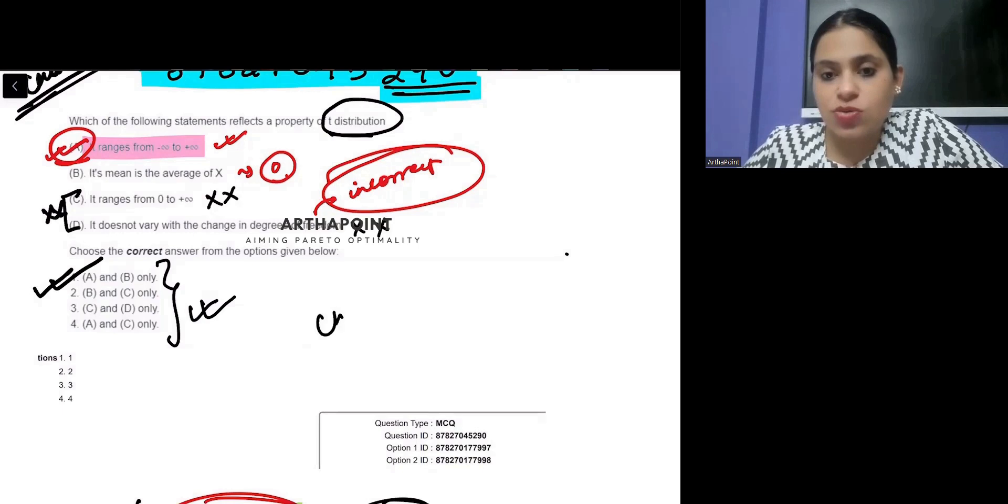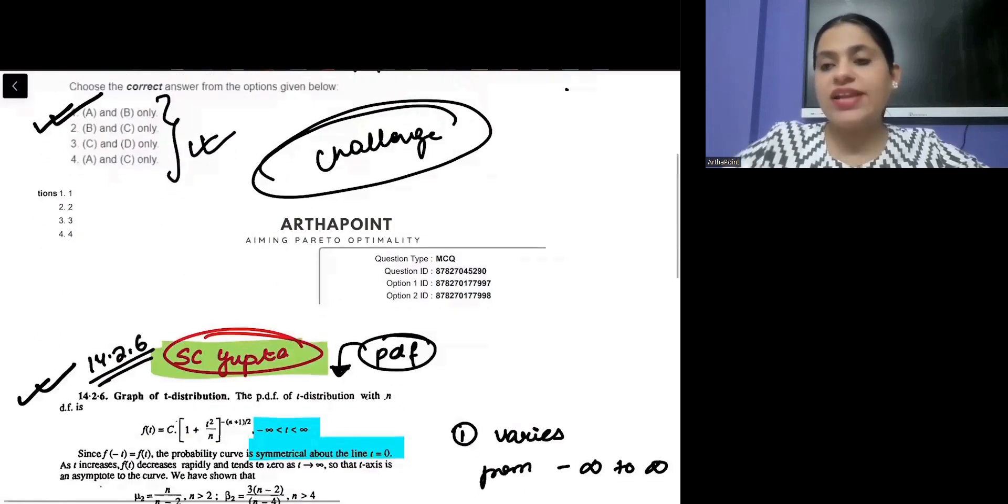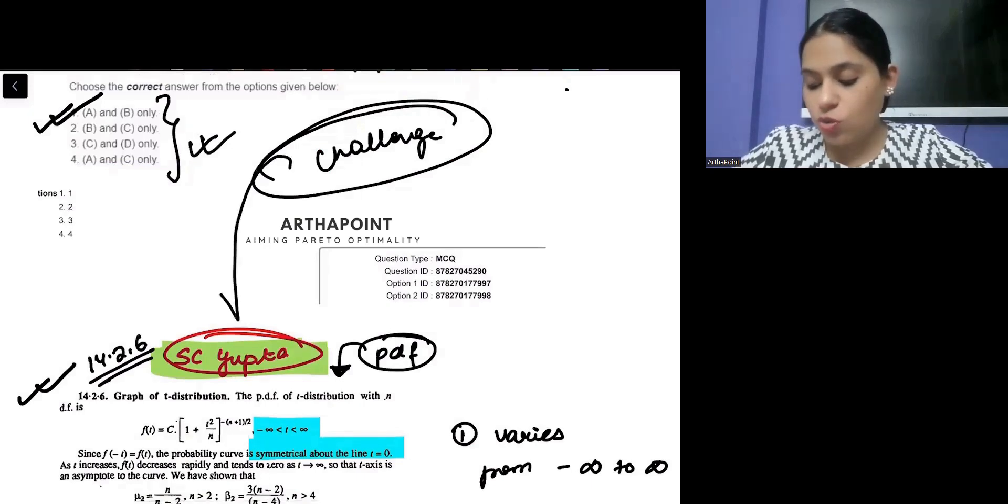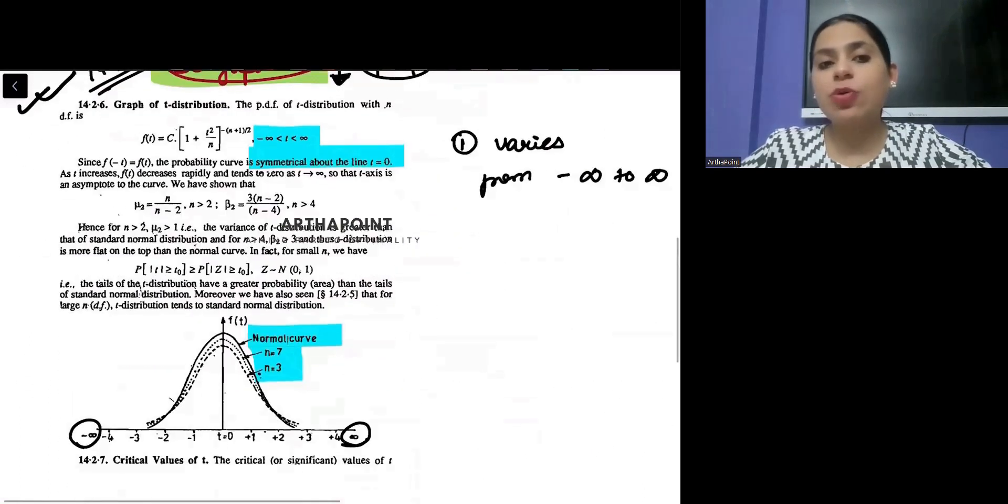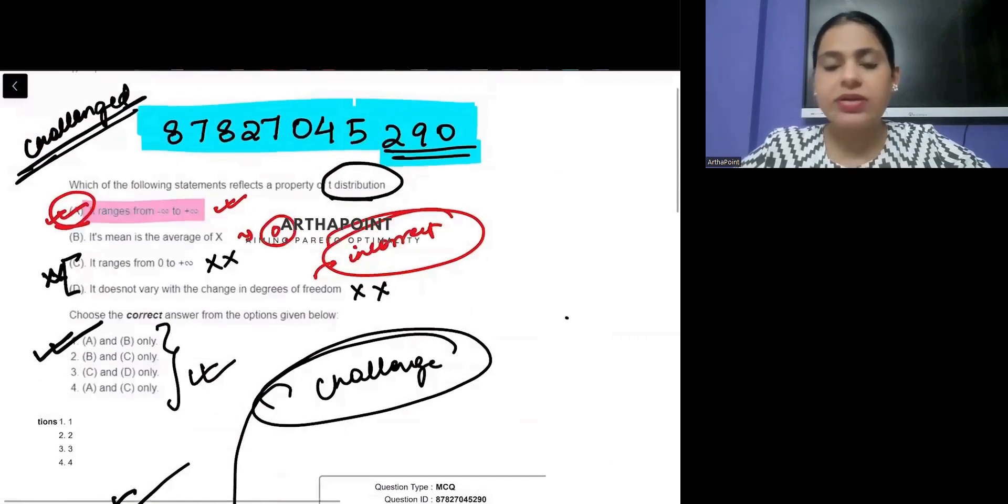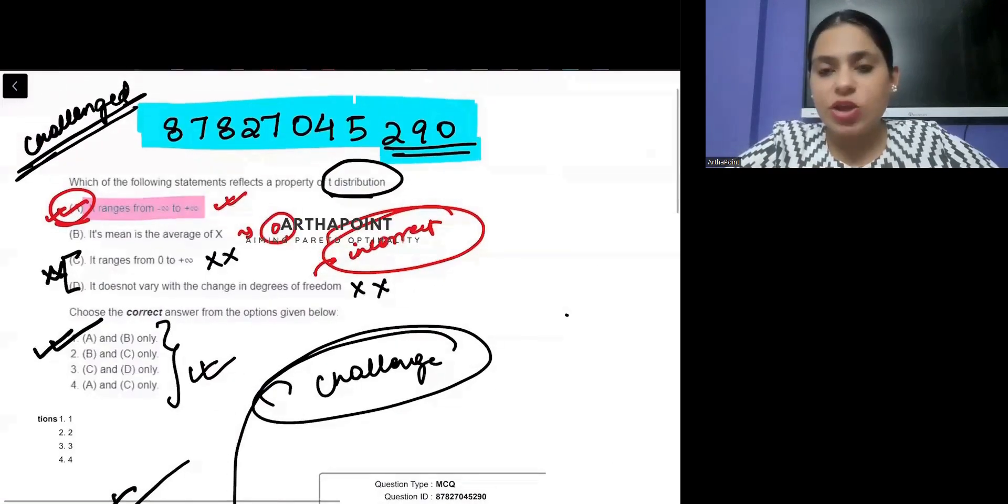So, I would request you, you can go ahead and challenge this question. But as I have told you, whenever you will challenge any question, you need to go ahead and you need to give the source, you need to give this snip. So, we are referring to SC Gupta 14.2.6 diagram, right? Okay, thank you.